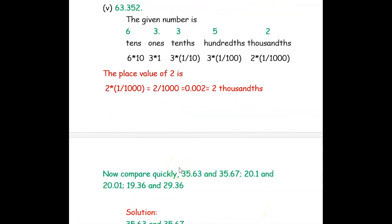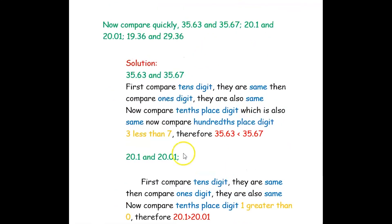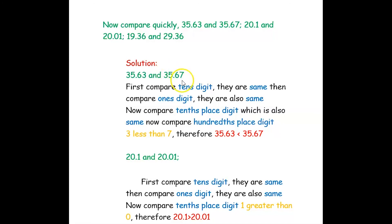Next we find the comparison. Compare 35.63 and 35.67. Start from the first digit — the tens digit — it is the same. Then compare the ones digit — also the same. Now compare the decimal part. The tenths place is the same: 6 and 6. Now compare the hundredths: here it is 3 and here it is 7. Since 3 is less than 7, we conclude 35.63 is less than 35.67.